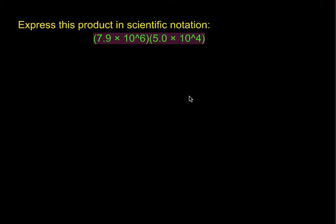Problem number one: express this product in scientific notation. 7.9 times 10 to the sixth, times 5 times 10 to the fourth. You start by separating the numbers with exponents from numbers without exponents. The numbers without exponents would be 7.9 and 5. You can easily do 7.9 times 5 on your calculator, and that would be 39.5.